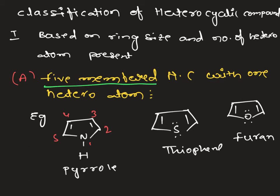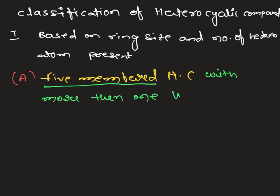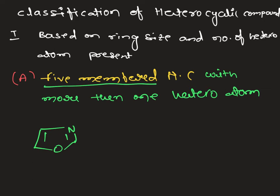Let's take another example with more than 1 heteroatom in the 5-membered heterocyclic compounds. Here the cyclic ring structure is 5-membered but the number of heteroatoms present is 2 — oxygen and nitrogen. This is an example of a 5-membered heterocyclic compound with more than 1 heteroatom, and the compound name is oxazole.